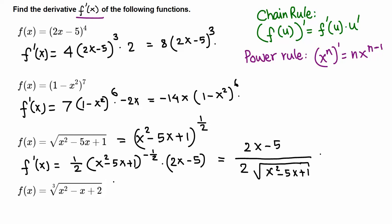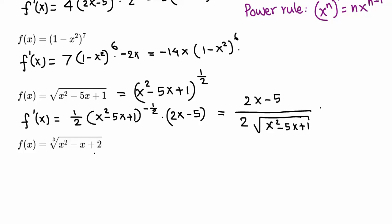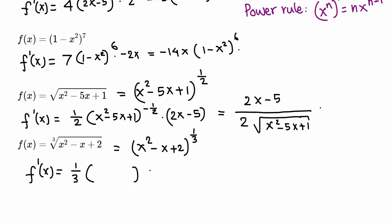Now let's go to the cube root problem. Rewrite the function: the cube root of (x² - x + 2) is the same as (x² - x + 2) raised to the 1/3 power. Something raised to 1/3 is the outer function; (x² - x + 2) is the inner function. Using the chain rule with the power rule: bring down 1/3, leave the inside alone, and the exponent becomes 1/3 minus 1, which is negative 2/3.